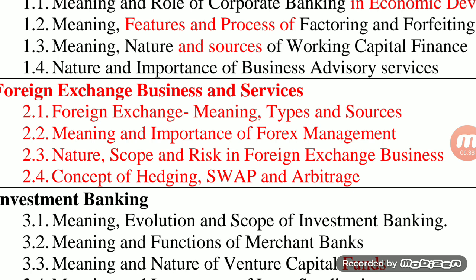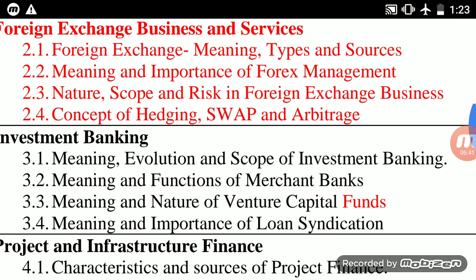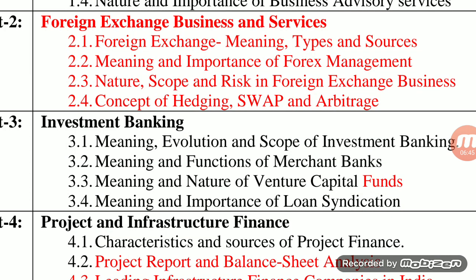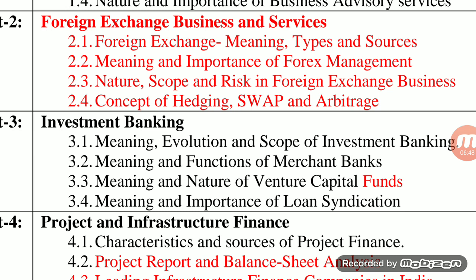The third unit is concerned with the interesting topic of investment banking. Investment banks are specially designed banks which provide special banking products or services to the corporate world, hence they come under corporate banking. In this chapter we are going to study how investment banks evolved and what is their scope. We will also study merchant banks and their functions, and you will get an opportunity to study two more concepts: venture capital and loan syndication — their importance and nature.